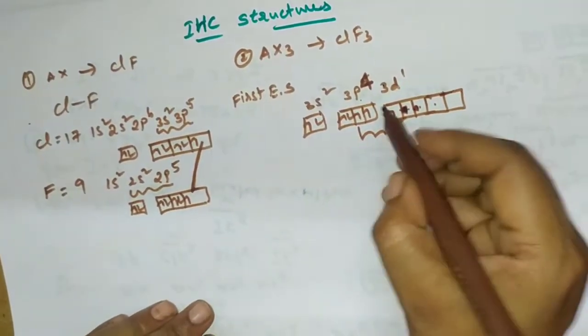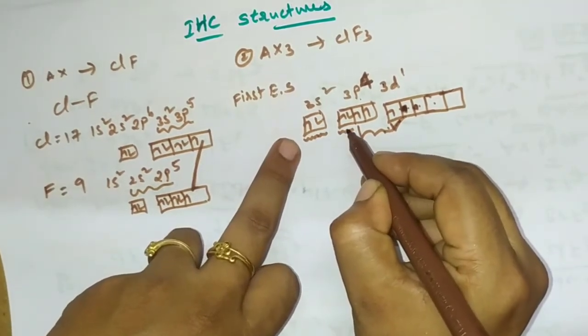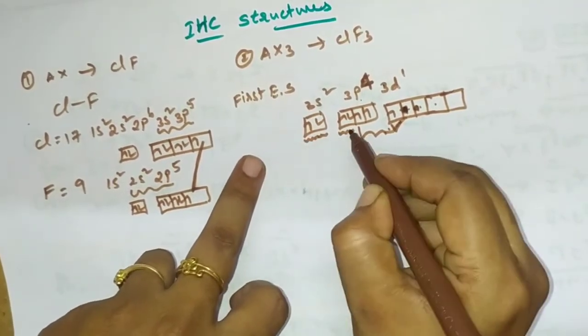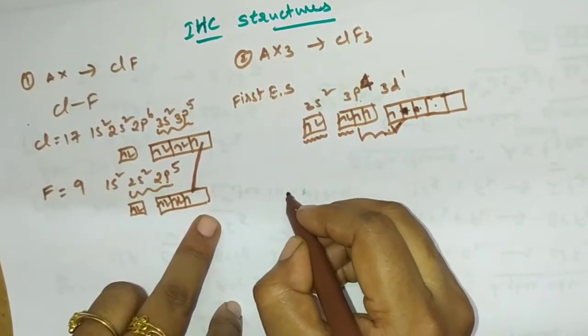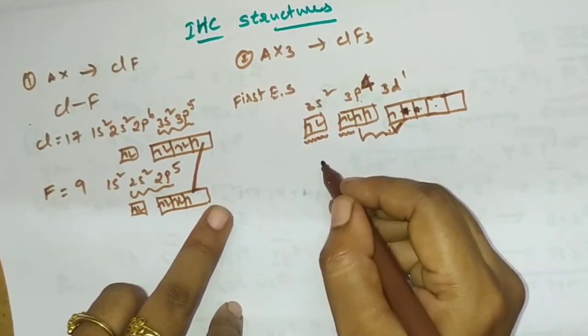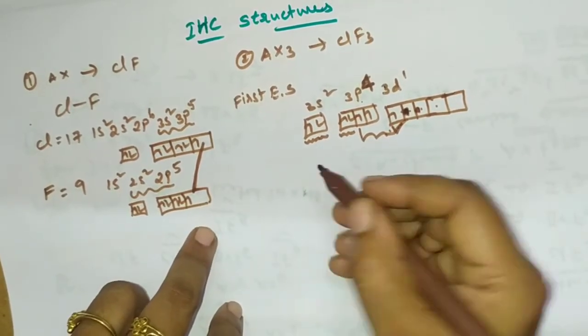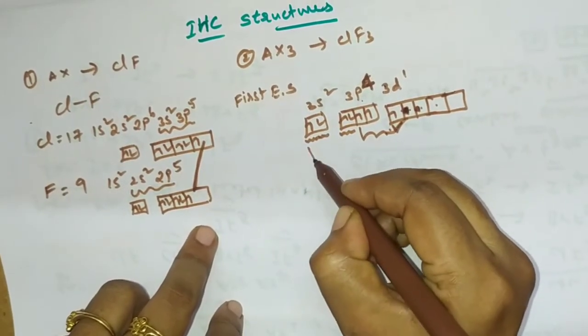So the unpaired, that means this one, chlorine is having 2 lone pair of electrons here. So here ClF3 bond will be formed. What is that shape will be formed? Just we have to wait and watch. So here which type of hybridization will take place? SP3D hybridization.